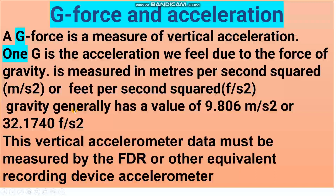About the value: generally the value is approximately 9.8 meters per second squared, or 32 feet per second squared. How to measure this acceleration? With the FDR or DFDR — digital flight data recorder — or other equivalent recording device such as a radio altimeter.